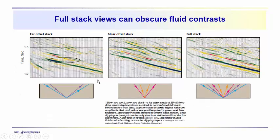This is an example where we have various stack views. We've got a far offset stack, so we're just stacking the traces at far offsets. Here we have near offsets, excluding the far offsets and just looking at near offsets, and here we have a full stack. This is what you're normally looking at when you're looking at your seismic display.